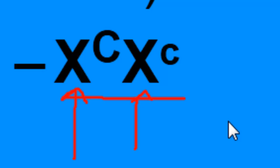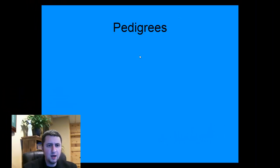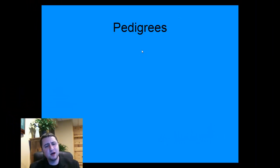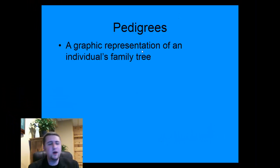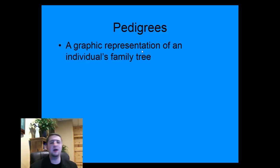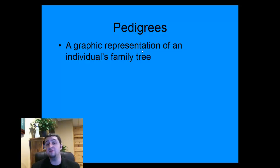If you'd like to find out more information on how colorblindness and sex linked traits work, please follow the link in the description below. On to pedigrees. Pedigrees are a way that we use a graph to represent genetic disorders that are passed down within families.